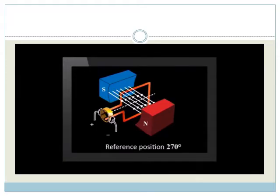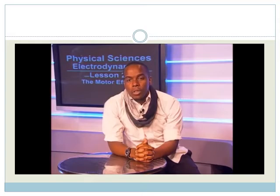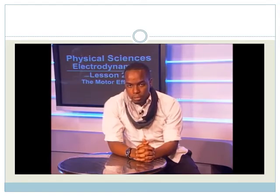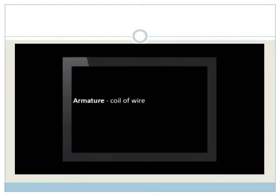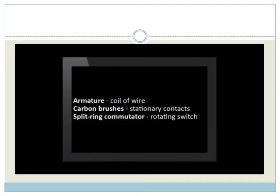The brushes are the parts that do not move. The commutator rotates between them. Let's go over those parts and their functions. The armature is the coil of wire. The brushes are fixed and made of carbon. The brushes touch the split ring commutator, which switches the direction of the current in the coil.